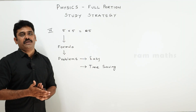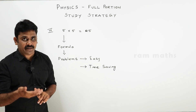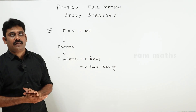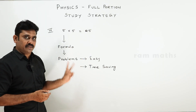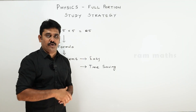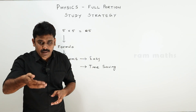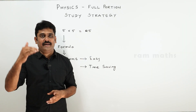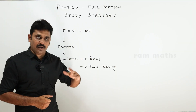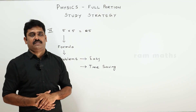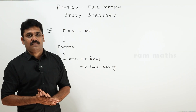Next, point-wise questions: properties of something, applications of something, characteristics. Applications, advantages — in the 2-mark and 3-mark sections, a minimum of one question each on properties and applications will appear. These are 2-line, 4-point-wise answers. Also focus on: differentiate between, advantages, disadvantages, limitations, merits, demerits — all point-wise questions that you should concentrate on.